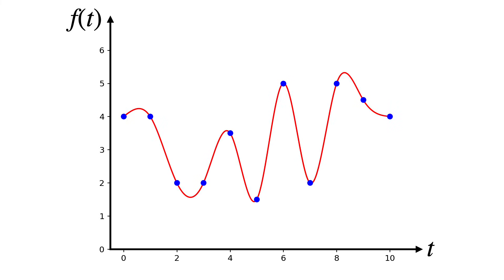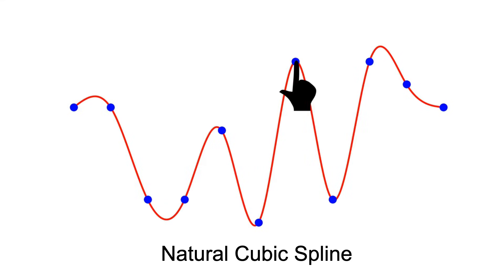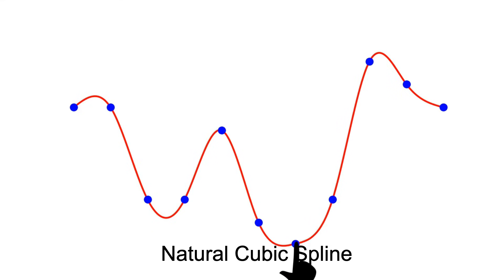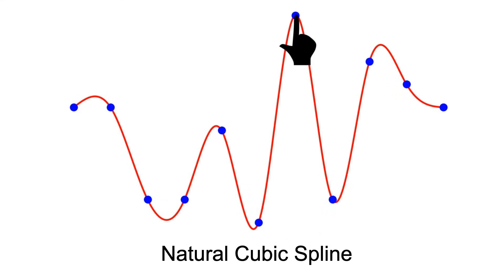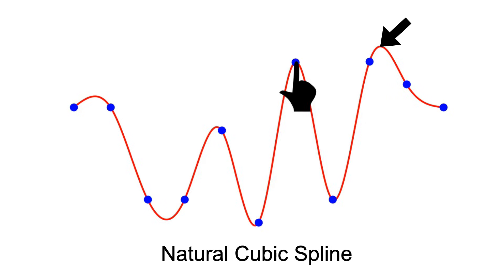While the natural cubic spline is amazing, it does give up something important. Notice how the whole curve moves a little when we change this one control point. See it move near this arrow, for example.